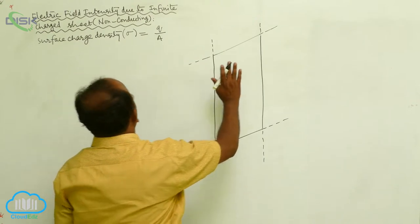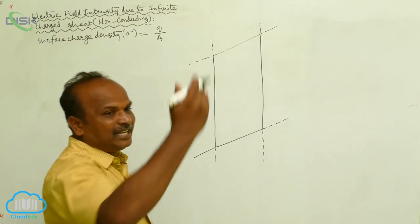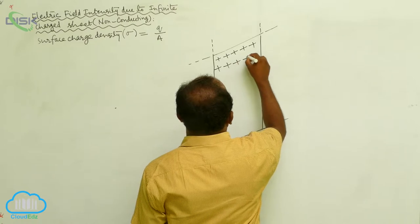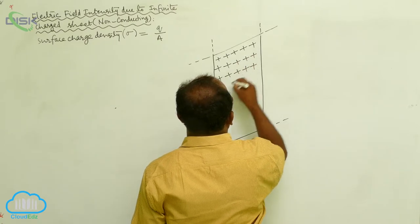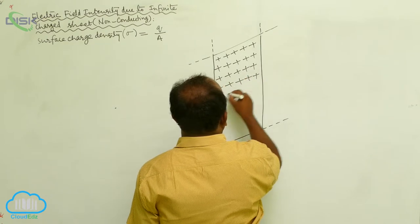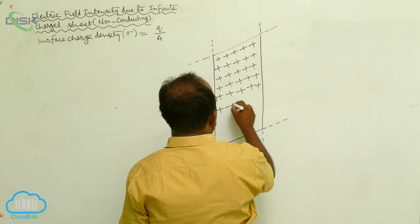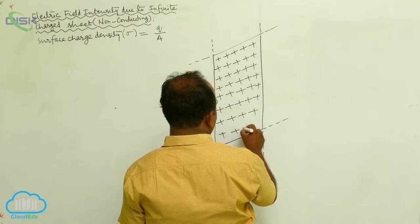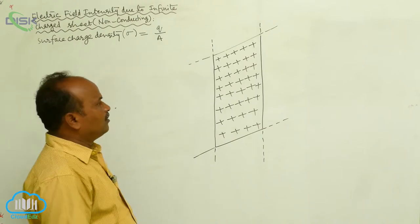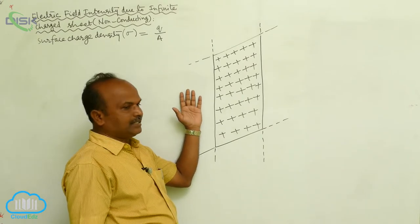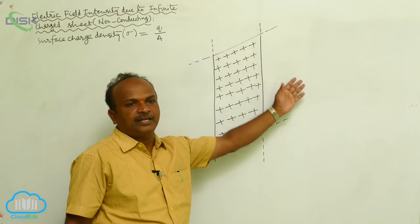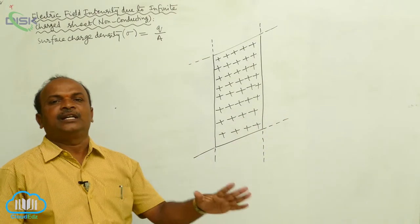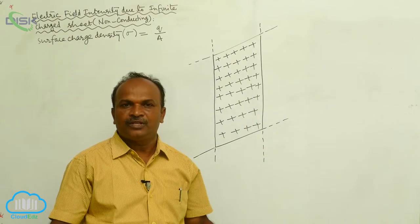Our topic is the electric field intensity due to the infinite charged sheet. This is a two-dimensional object with the charge distributed on a surface — the charge may be positive or may be negative. To calculate the electric field intensity on the left side or right side of the sheet, we need to choose a Gaussian surface.